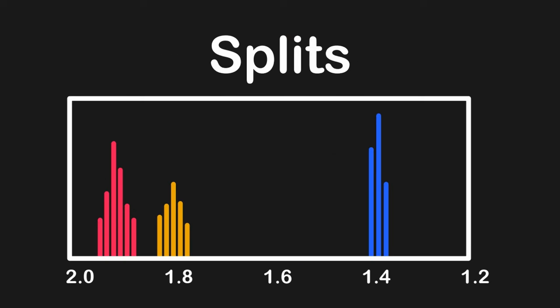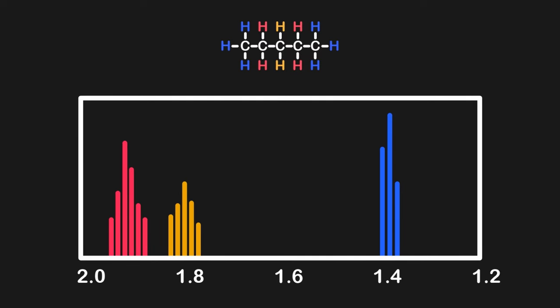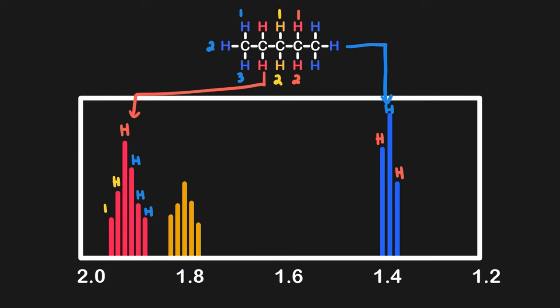Now that we have learned about signals, let's turn our attention to splits, or how many individual peaks comprise each signal. For example, the blue signal on the NMR spectrum here is split into three peaks, referred to as a triplet. Splits occur because of adjacent hydrogens — hydrogens on an atom one bond away. In pentane, the blue signal should have three distinct splits: one for the blue hydrogens, plus two additional due to the adjacent red hydrogens. The red signal should have six splits: one for the red hydrogens, five additional for the two adjacent yellow hydrogens, and the adjacent blue hydrogens. This is where the N+1 rule comes from, where the number of splits equals N (the number of adjacent hydrogens) plus one.